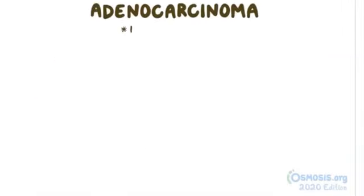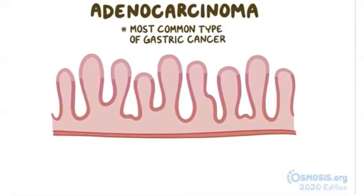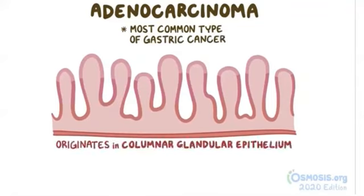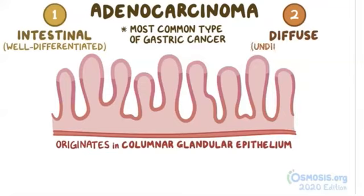Adenocarcinoma is the most common type of gastric cancer, and it originates in the columnar glandular epithelium. It's further divided into two subtypes: intestinal, or well-differentiated adenocarcinoma, and diffuse, or undifferentiated adenocarcinoma.